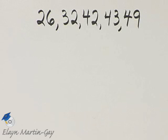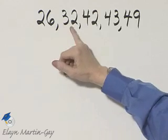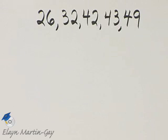Let's find the mean, median, and mode of this list of numbers. Notice I have them in numerical order, which helps when finding the median and the mode.